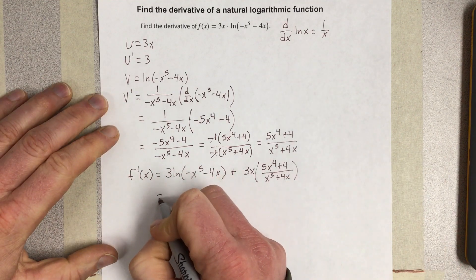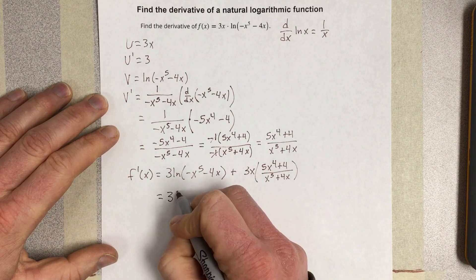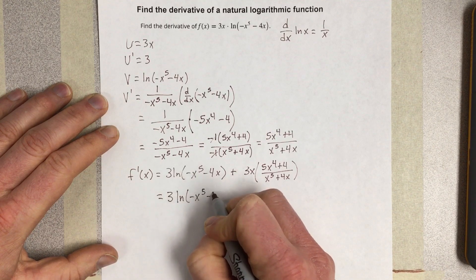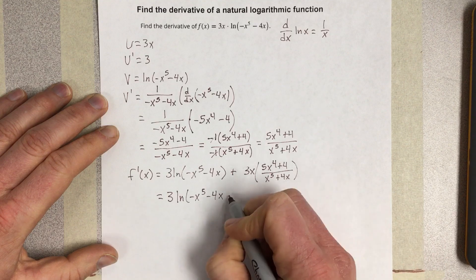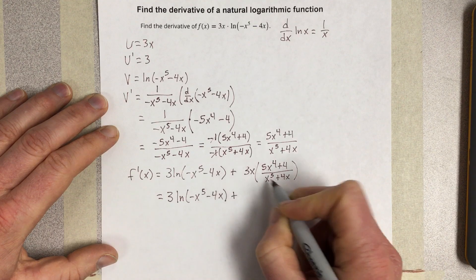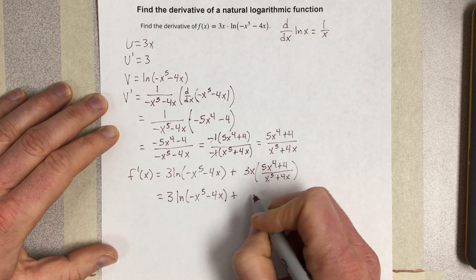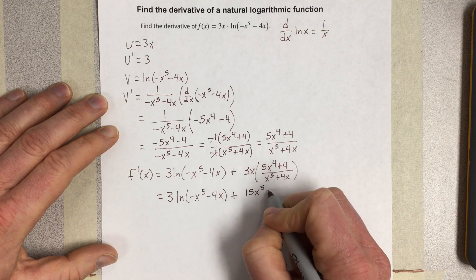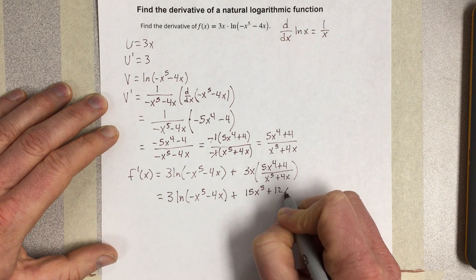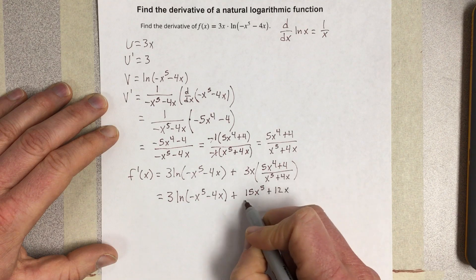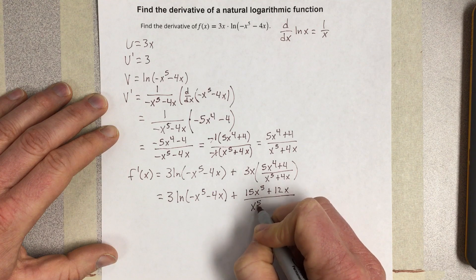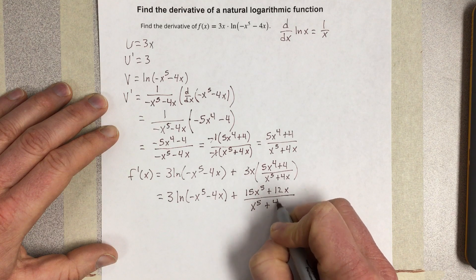So I end up with 3 natural log of negative x to the 5th minus 4x plus, if I distribute that 3, 15x to the 5th plus 12x over x to the 5th plus 4x.